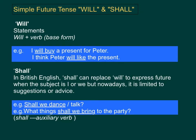Shall. In British English, shall can replace will to express the future when the subject is I or we, but nowadays it is limited to suggestions or advice. For example, shall we dance or shall we talk? What thing shall we bring to the party?